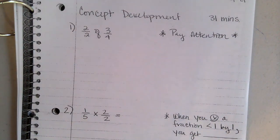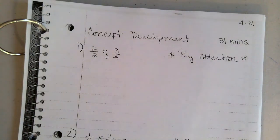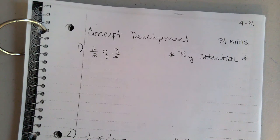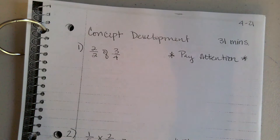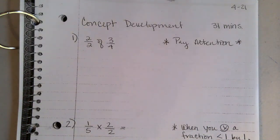Welcome back to Engage New York Module 4 Lesson 21. In this lesson, our objective is to work on the idea of resizing — a big idea in fifth grade — resizing and rescaling within multiplication. The idea is: can you explain the size of the product and relate a fraction and a decimal equivalence to multiplying by a fraction equal to one? We'll explore what happens when you multiply a fraction by a fraction greater than or less than one.